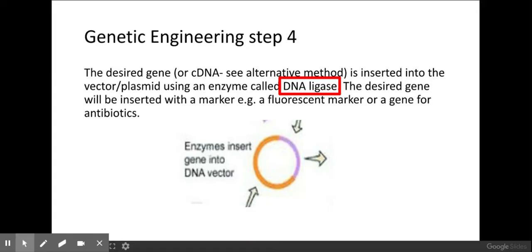As well as annealing in the desired gene, a marker is also usually included so you can see if your desired gene has been taken up by your vector. That marker might be a fluorescent marker, or it could be a gene that codes for antibiotic resistance.